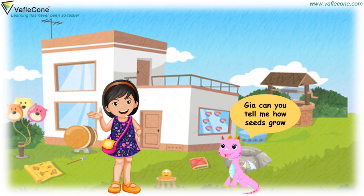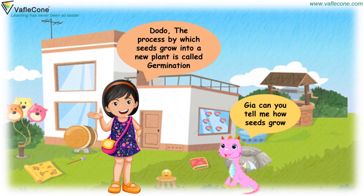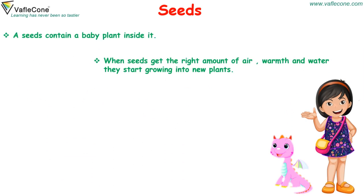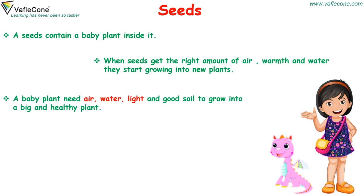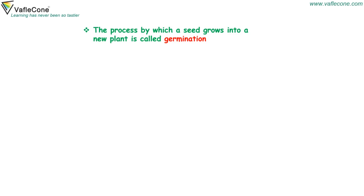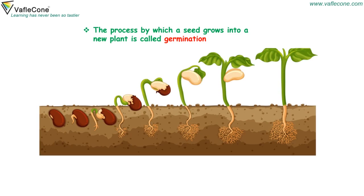Jiya, can you tell me how seeds grow? The process by which seeds grow into a new plant is called germination. A seed contains a baby plant inside it. When seeds get the right amount of air, warmth and water, they start growing into a new plant. A baby plant needs air, water, sunlight and good soil to grow into a big and healthy plant.